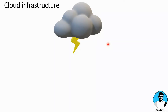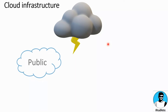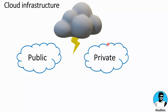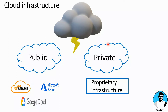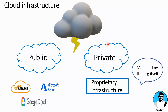If we talk about any cloud infrastructure today, it falls under public cloud or private cloud. Public cloud has three major players which are Amazon, Microsoft, and Google Cloud. These are also called hyperscalers because they manage the whole physical infrastructure by themselves. However, private cloud is a proprietary infrastructure which is managed by the organization itself where it is deployed.